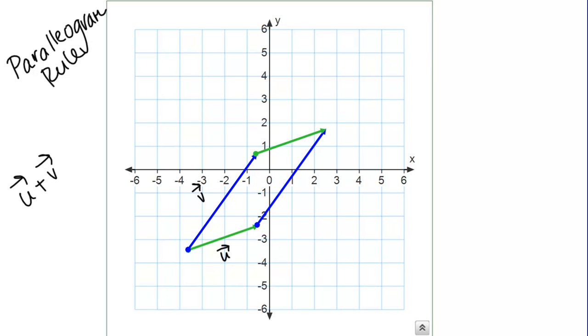Then, the vector U plus V, if I draw that in, is going to go from this tail tail corner to this head head corner like this. You can see that this looks very similar to what we had before. It should look exactly the same. The position might be slightly different, but it's the same vector. It has the same magnitude in the same direction. This is the vector U plus V.